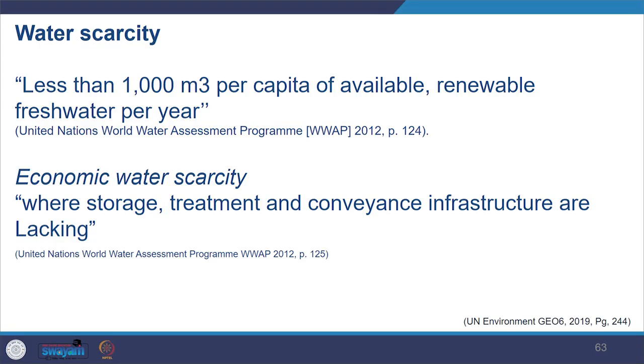Moving on, let us understand water scarcity. Water scarcity is defined as less than 1000 cubic metres per capita of available renewable fresh water per year. Excessive withdrawals are often caused by water scarcity — whenever we are excessively withdrawing, it is because there is less water available.